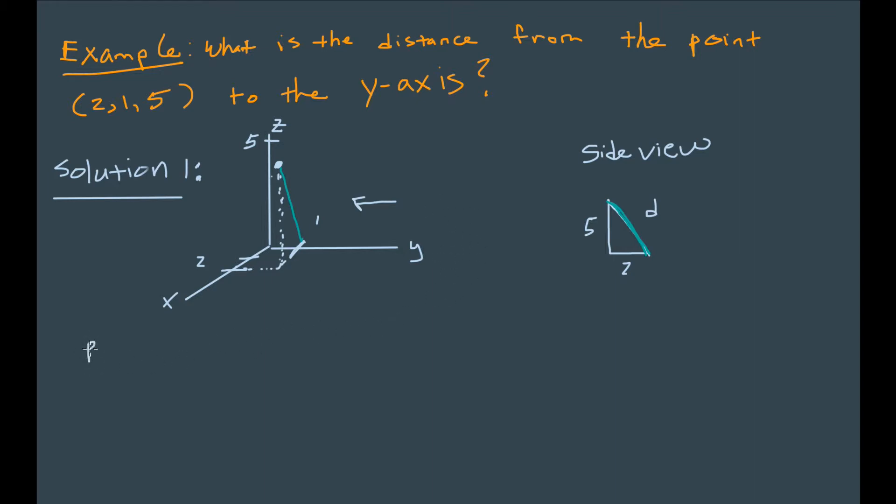So now we can use the Pythagorean theorem. And what does the Pythagorean theorem tell us? It tells us that the sum of the squares of the sides of the triangle should be equal to the square of the hypotenuse. So that's d squared equals 5 squared plus 2 squared. Now that tells us that d squared should be equal to 25 plus 4, which tells us that d should be the positive square root of 29.